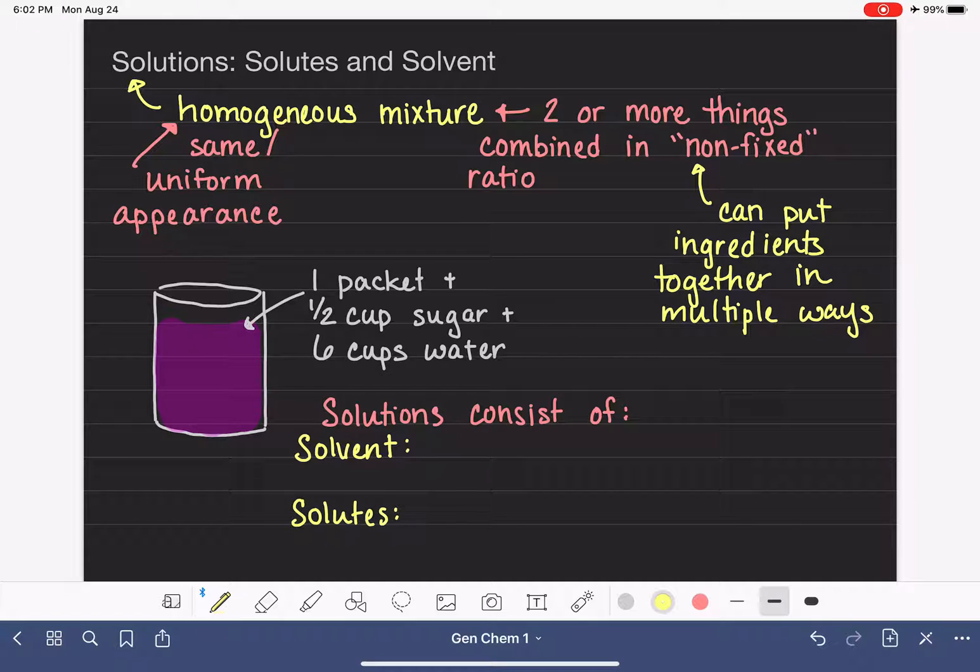The solvent is the component that we have the most of. So this is the component of the solution that is present in the greatest amount. It's the thing that we have the largest quantity of.